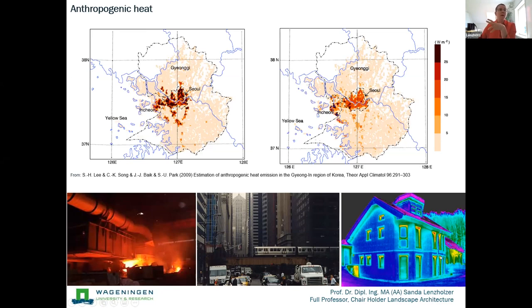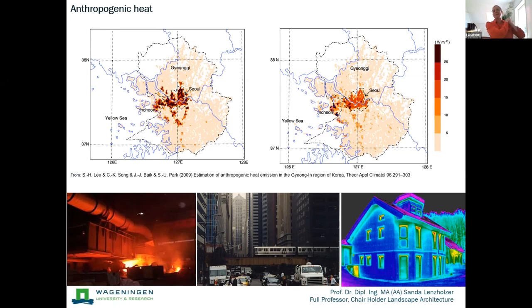Our heating and cooling of buildings also has an influence. Putting in air conditioners to try to cool buildings really starts up a vicious circle: when everyone starts putting in air conditioners in summer to cool the indoors, they actually warm the city outside by 10%. This is really a no-go — air conditioners are making the situation worse.